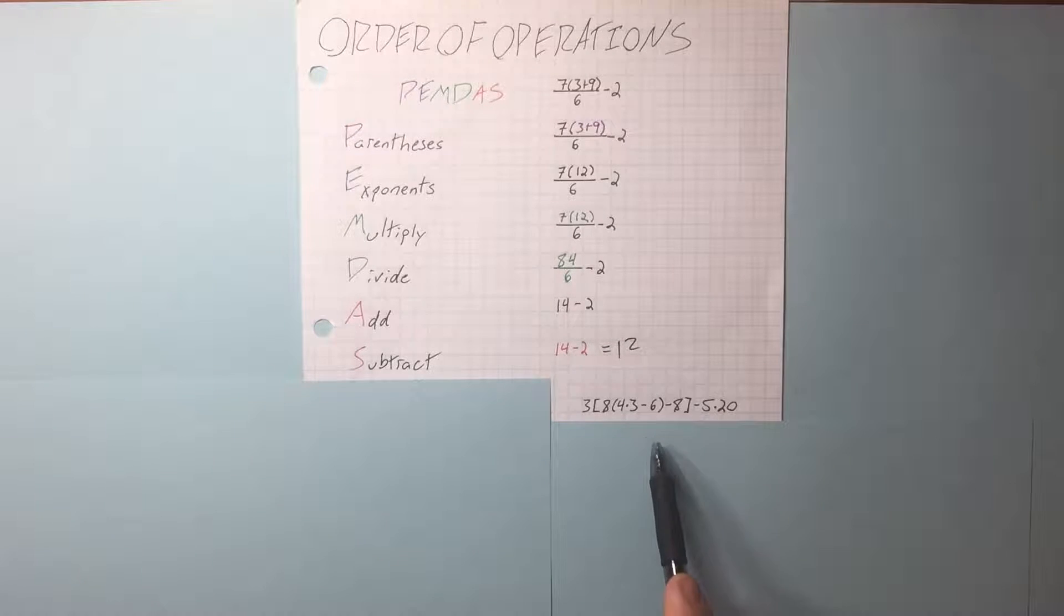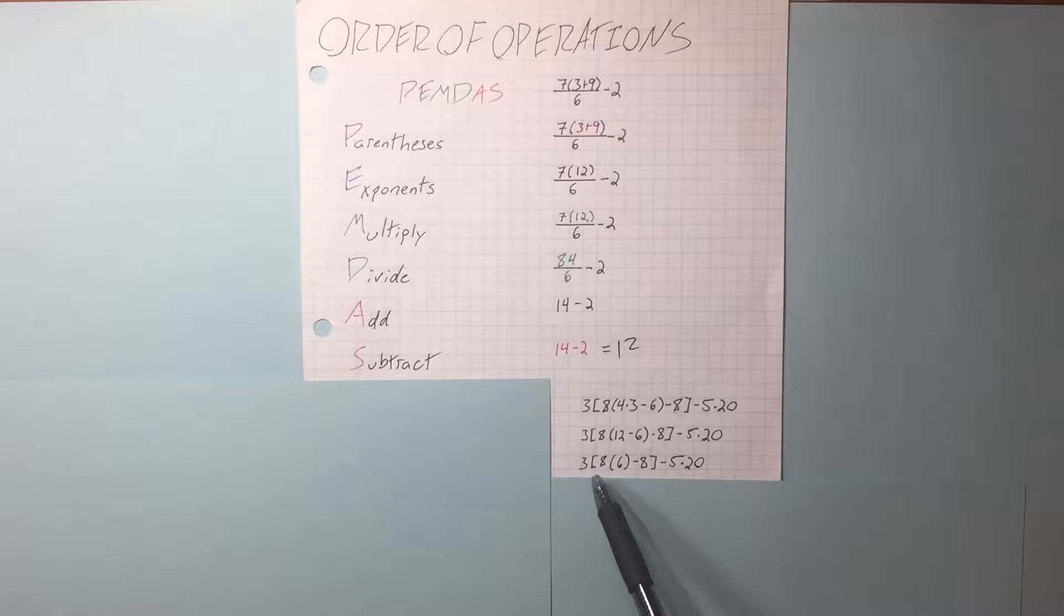In an example, we have two parentheses - inside parentheses and outside parentheses. So we need to do the inside, and then we can do the outside. Multiplication is higher than subtraction, so we do that first. Then we do our subtraction. Now we do what's in the larger set of parentheses. Our multiplication is still first, and then subtraction.